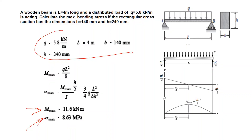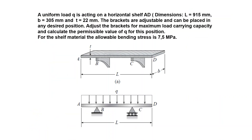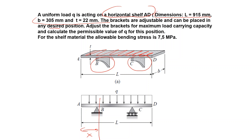In the second problem, we have a horizontal shelf with given dimensions. There are two brackets for this shelf and their location is adjustable. You are asked to adjust these brackets for maximum load carrying capacity, so you have to find an x value where the load carrying capacity is maximum.